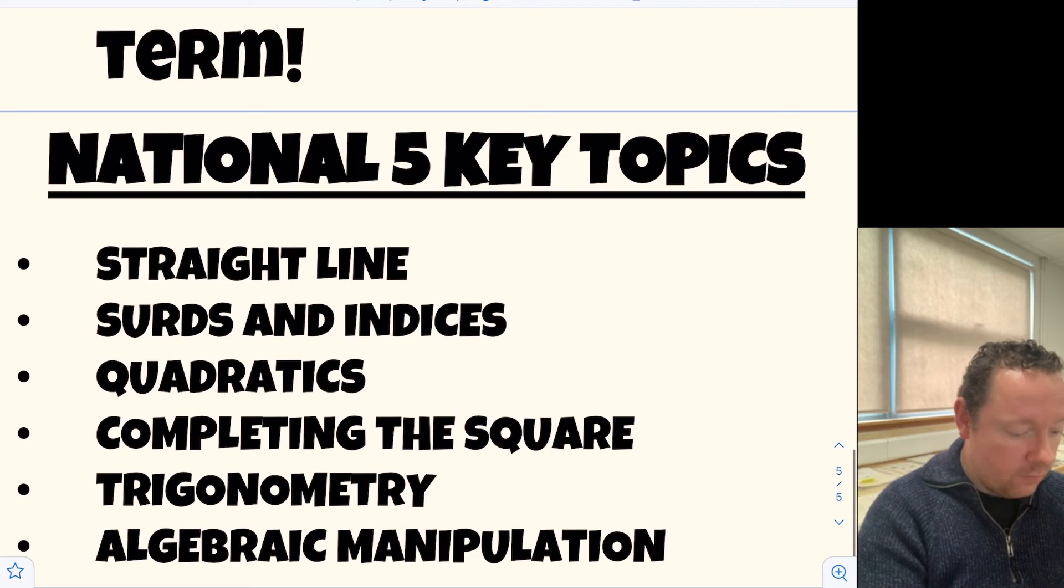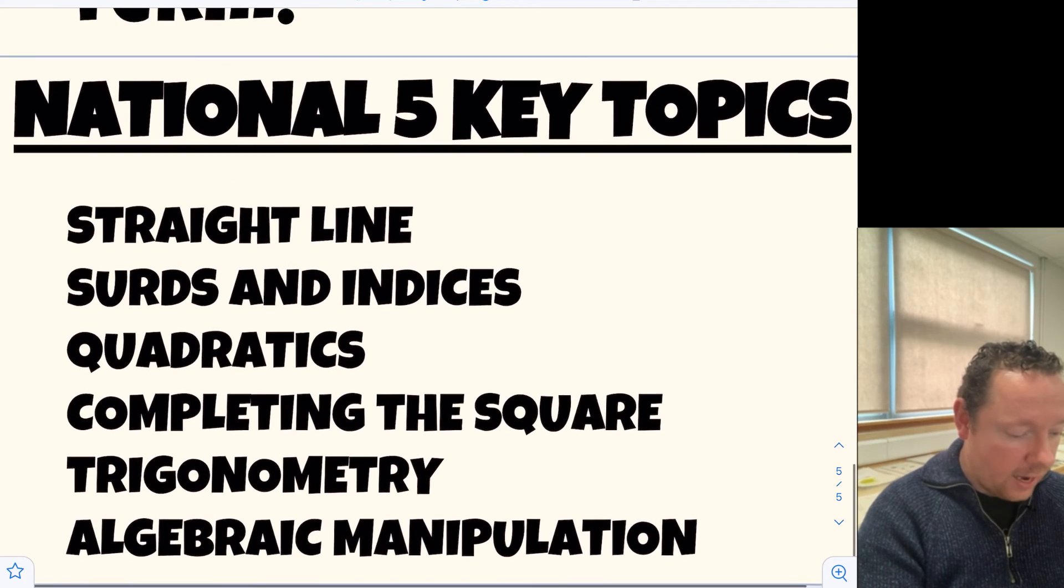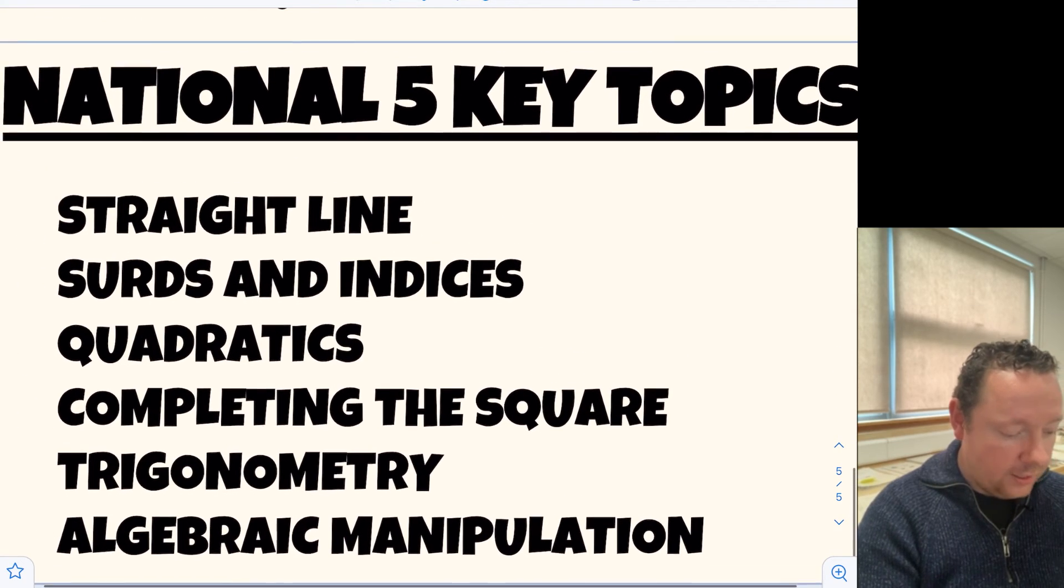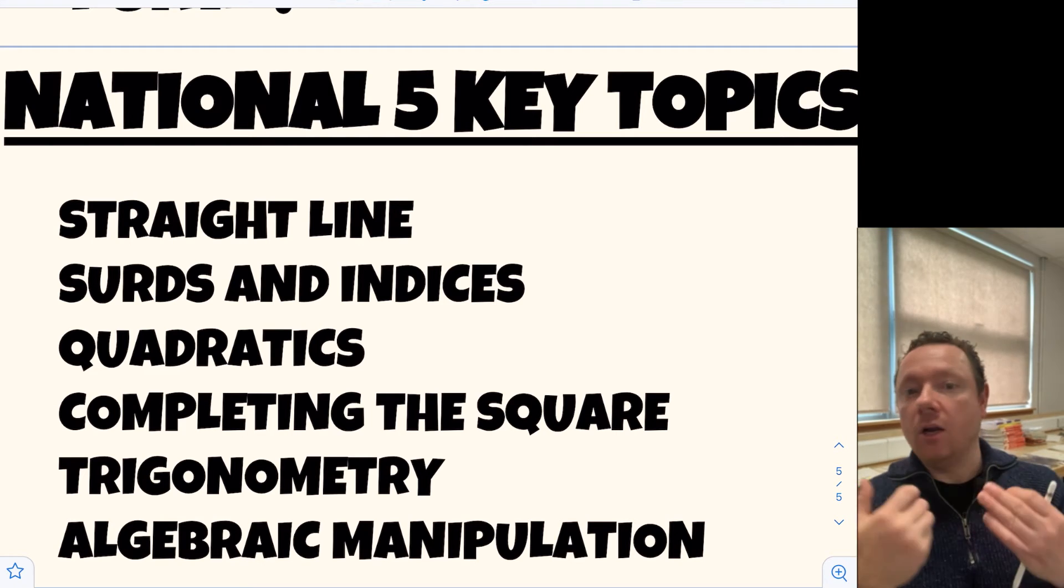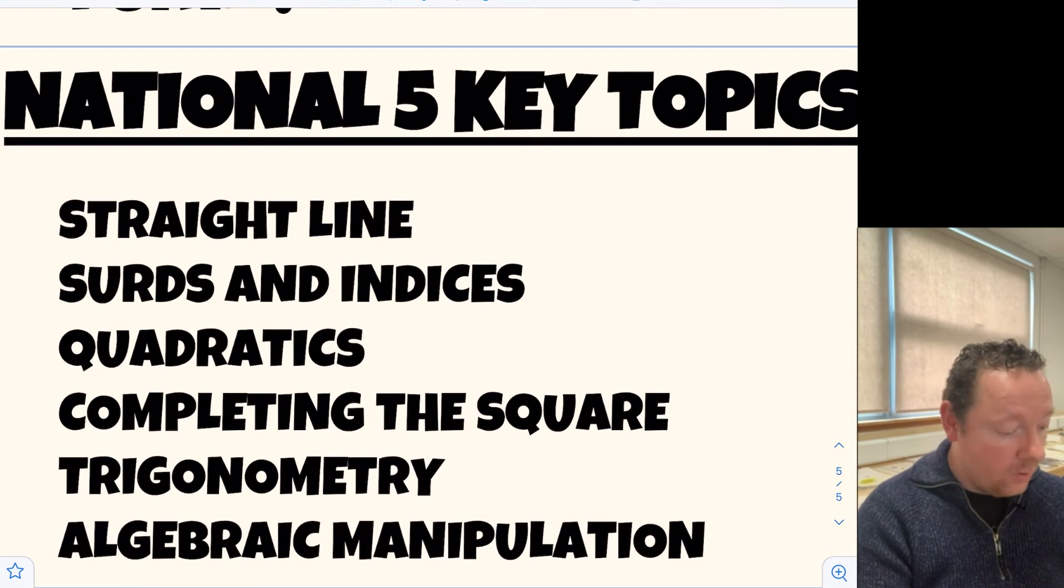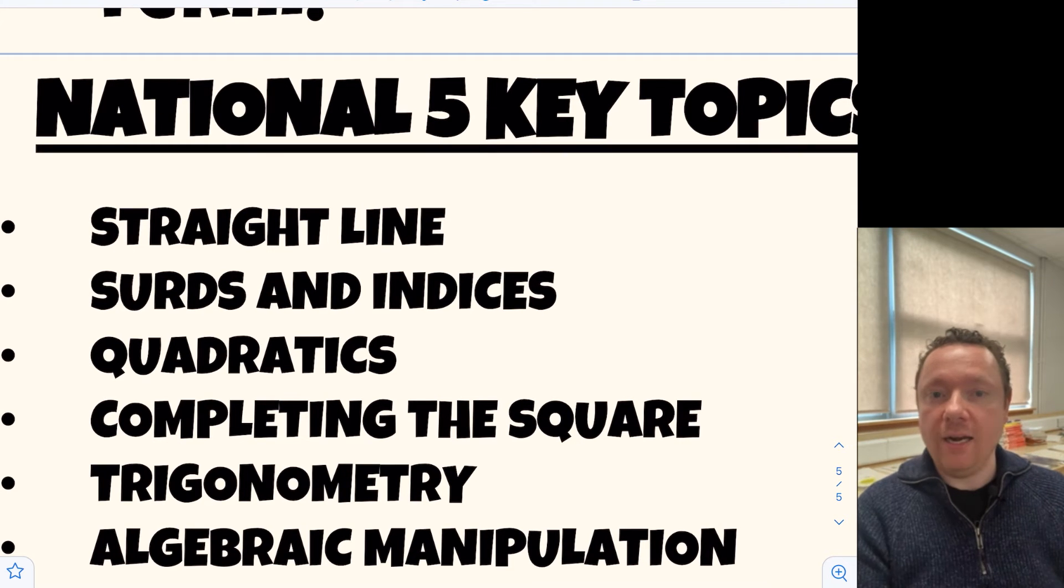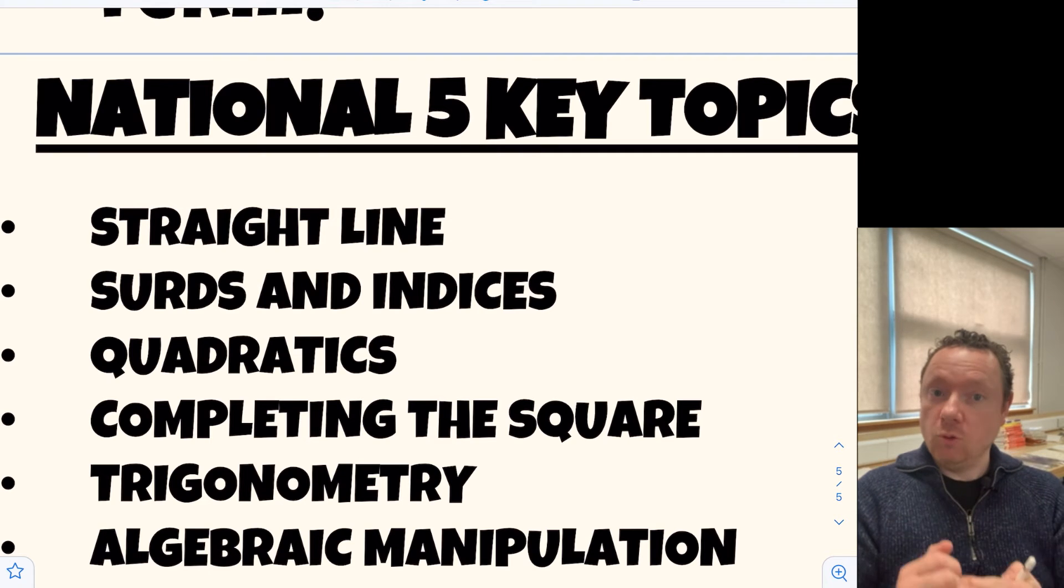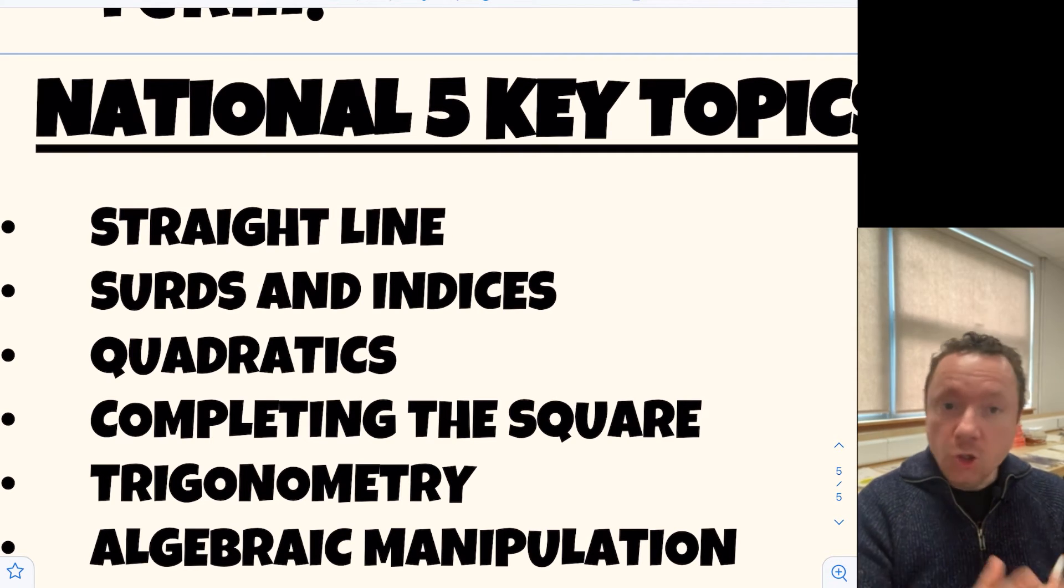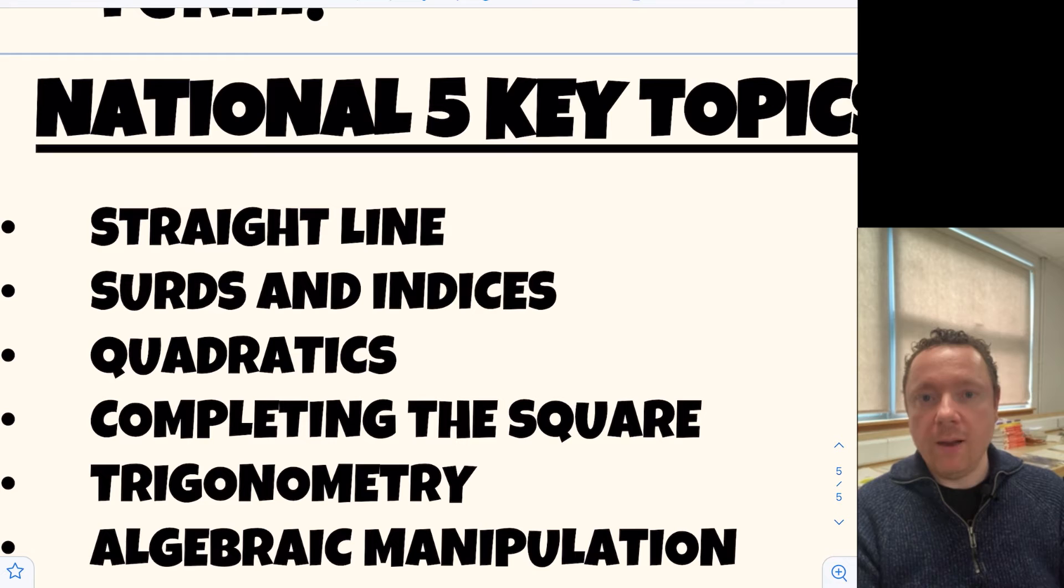And to finish off with key National 5 topics that you need to be good at. Things that in higher are assumed knowledge but come up over and over again. The first one, the main one, is straight line. Now, straight line is a topic at higher. And it's quite a big topic. It's probably one of the first ones that will get taught next year. You need to be able to do straight line straight off the bat.